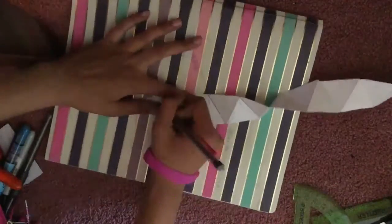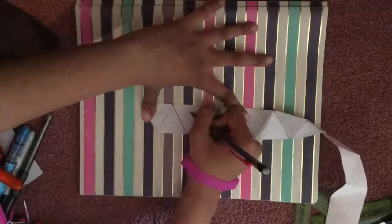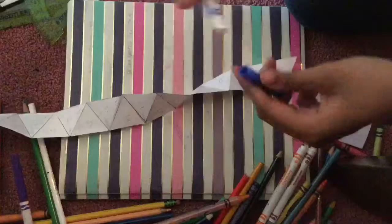After that, you want to flip the whole thing over and you want to name the first flap glue. And you want to name the rest 4, 4, 5, 5, 6, 6 and so on.